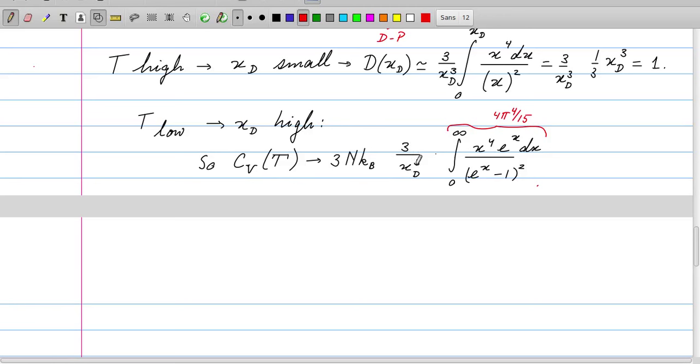And x_D can be written as T_D over T. That means, and that is the most important conclusion here, that the c_v scales as T to the power three for small values of the temperature, for low temperatures.